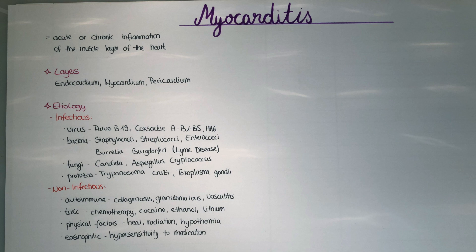There is also eosinophilic myocarditis — a hypersensitivity reaction to medication. Eosinophils are usually seen in allergies or in reactions to foreign bodies. Hypersensitivity reactions can occur with medications such as penicillin, sulfonamides, tricyclic antidepressants, and methyldopa, causing myocarditis.